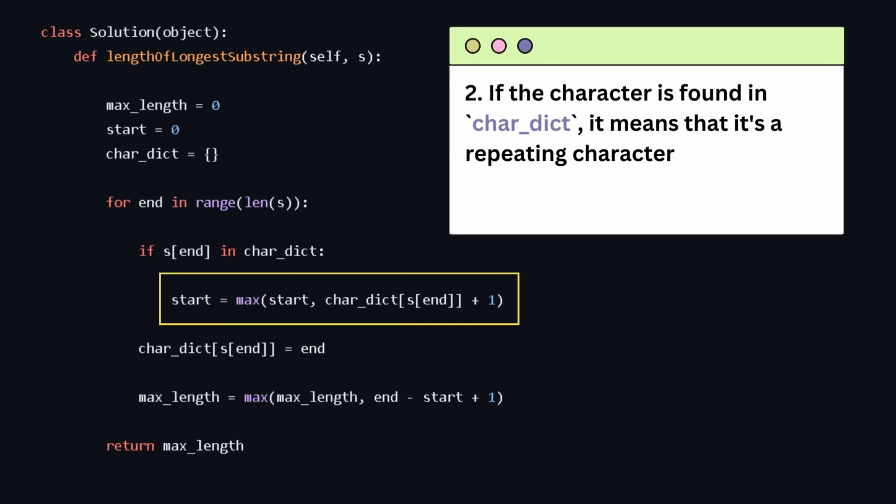Number two, if the character is found in the character dictionary, it means that it is a repeating character. In this case, we update the start index to the maximum of its current value and the next index of the repeating character in the character dictionary. This ensures that we move the starting index of the current substring to the right of the repeating character, effectively excluding the repeating character from the substring.